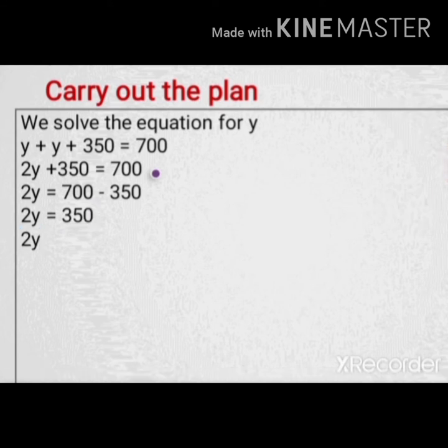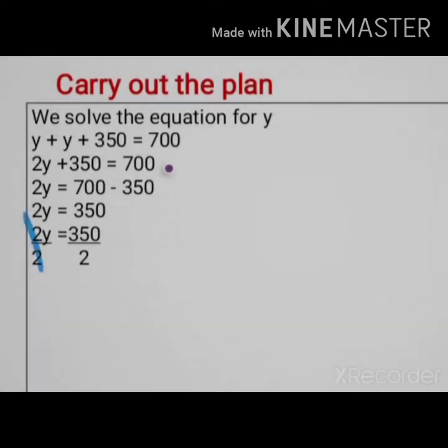So 2Y equals 350. In this case, we will divide both sides by 2 so that Y will remain. 2Y divided by 2 equals 350 divided by 2. 2 divided by 2 equals 1, so Y will remain. And then 350 divided by 2 equals 175.